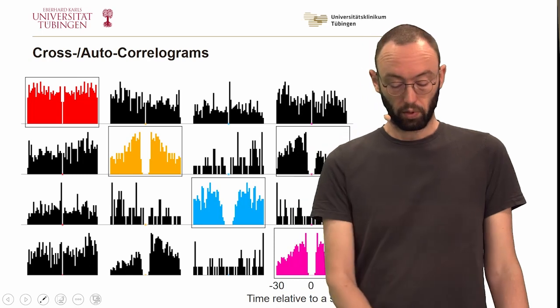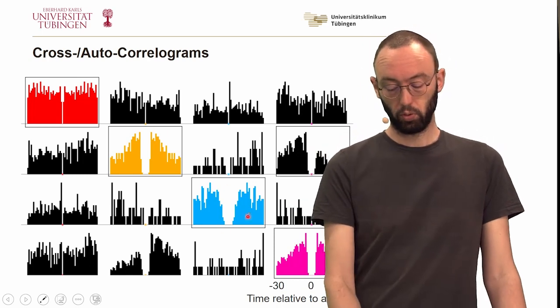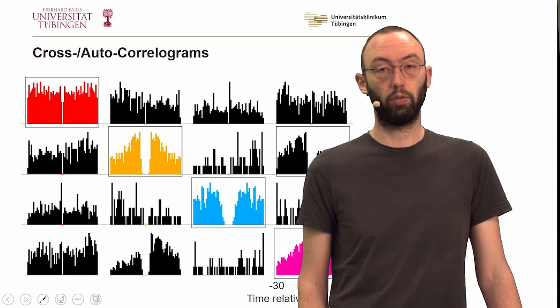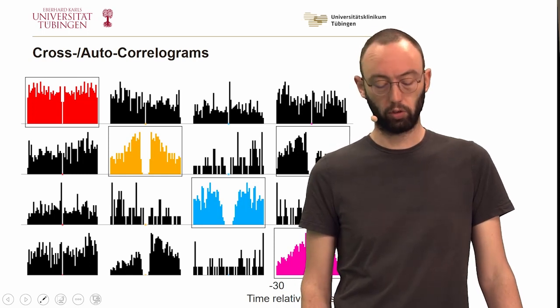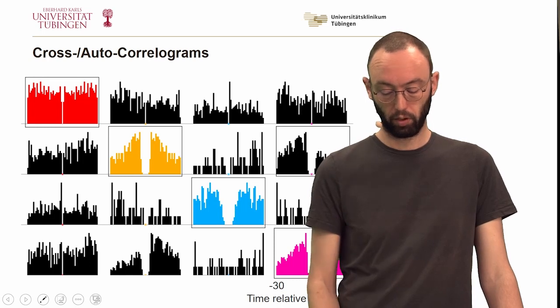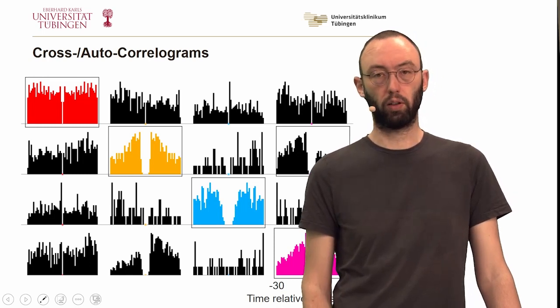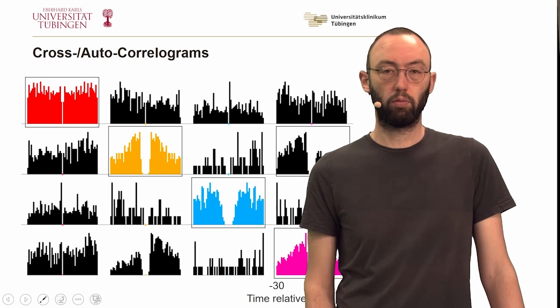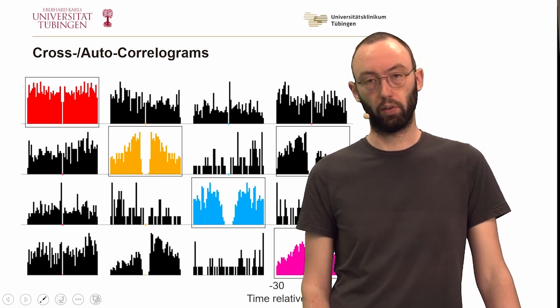On the other hand, the orange, the blue and the pink cluster all show evidence for a refractory period. You can clearly see this trough here in the middle, plus minus a few milliseconds. So all of these we can retain as candidates for single unit clusters.